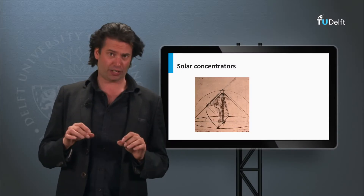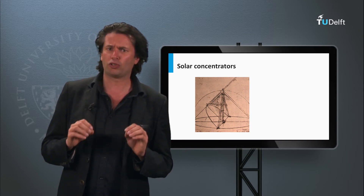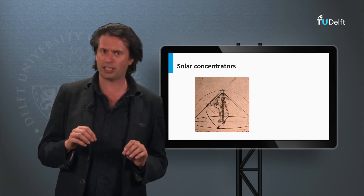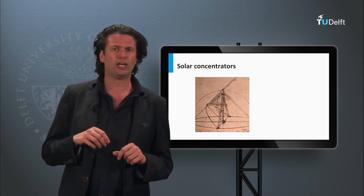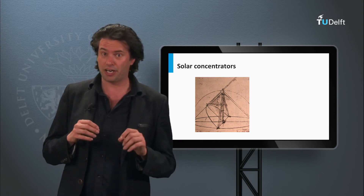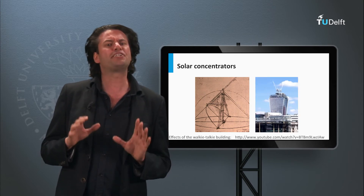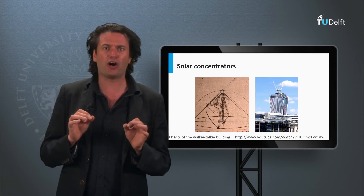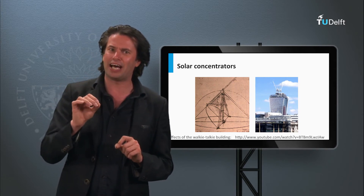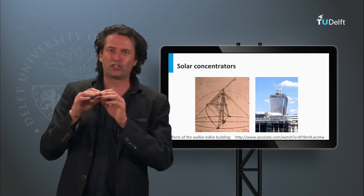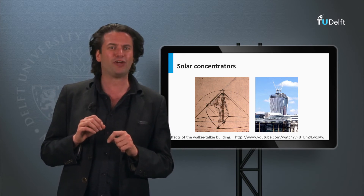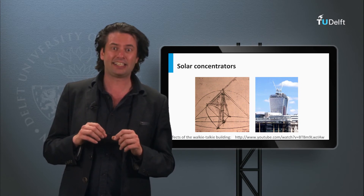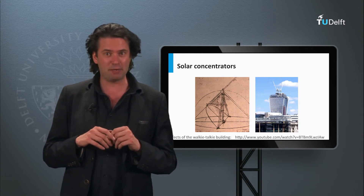Let's now focus on the concentrator system. Solar concentration systems have been known and explored for a long time. From the first concept developed by Archimedes, to the concentrators designed by Leonardo da Vinci. A more recent example is the walkie-talkie building in London, which by virtue of its shape is able to concentrate the light that strikes on it in a small area. In this area on the streets of London, temperatures of more than 90 degrees have been reached and it has even burned some objects in the neighboring shops.